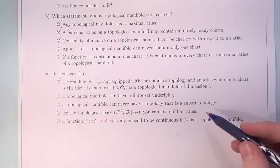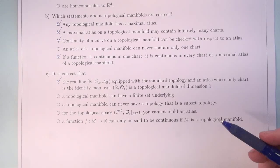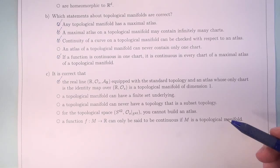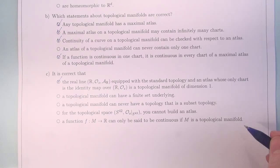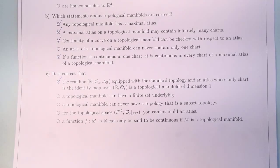The last answer: a function from some M to R can only be said to be continuous if M is a topological manifold. Well, that is also not correct, since continuity can already be checked on a topological space. We don't need the notion of a topological manifold, therefore. So this was the first exercise — some questions about topological manifolds.